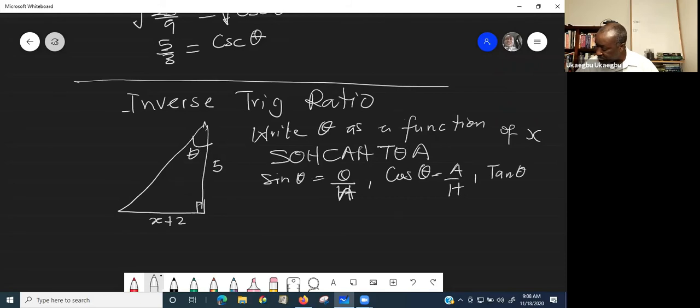And cos theta is adjacent over hypotenuse. And tangent theta is opposite over adjacent. That's basic.